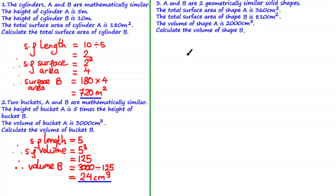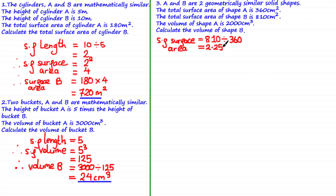Unlike previous questions where we were given heights, here we've been given the total surface areas of shapes A and B. We can get the scale factor of volume if we know the scale factor of length by cubing it, so we need to find the scale factor of length from the surface areas. We find the scale factor of surface area by dividing 810 by 360, giving 2.25. Taking the square root gives the scale factor of length: the square root of 2.25 equals 1.5.